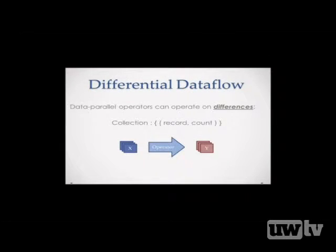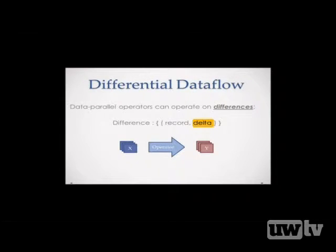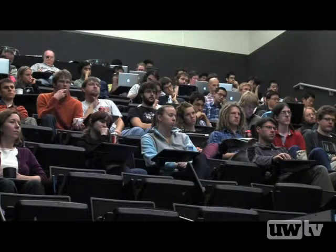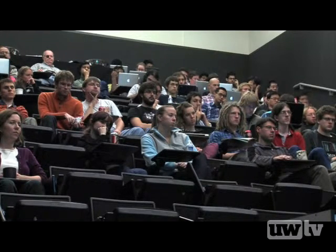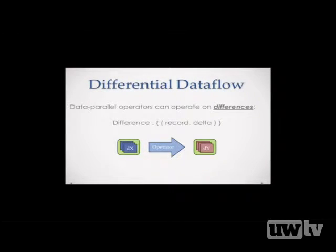The thing that NAIAD is going to do is stop talking about these operations in terms of collections and start talking about them in terms of differences. If you think of a collection as a big set of pairs of records and counts — a record is maybe a string like 'Frank', and the count is how many times it exists in the dataset — we're going to instead talk about differences where we put a delta: the change from the previous count. This is actually pretty simple. If we start with the empty collection, these deltas are just counts.